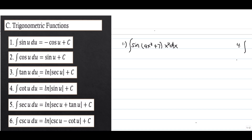The third is the integral of tangent u du equals ln|sec u + sin u|. The fourth is the integral of cotangent u du equals ln|sine u| plus C.